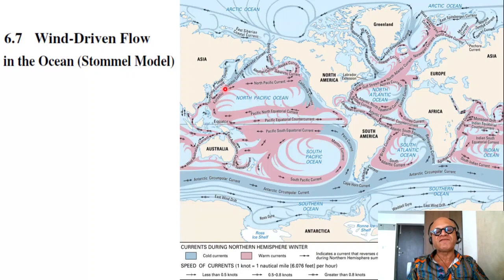Had these intensified boundary currents on the western side: the Gulf Stream, the Kuroshio, the East Australian current, the Brazil current down here. Indian Ocean is a bit complicated because you have a western boundary current that completely reverses direction because of the monsoonal reversals.